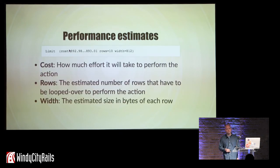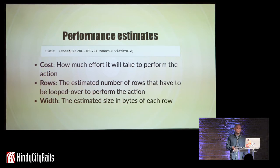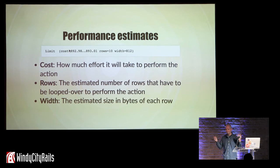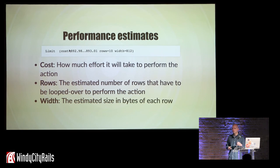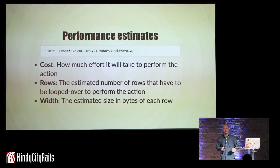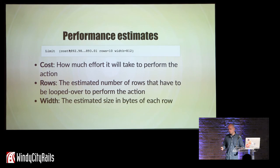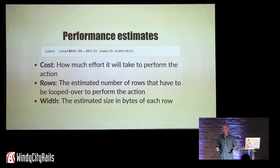Sequential scan on books means: get all the book records. Sort them by created at. Limit — take the first ten. The second part of the query plan is performance estimates. Performance estimates have three parts: a cost, which is a unitless number only meaningful when comparing to other costs in the same query plan; rows, the estimated number of rows that have to be looped over — this is very useful; and width, which is the bytes in each row.